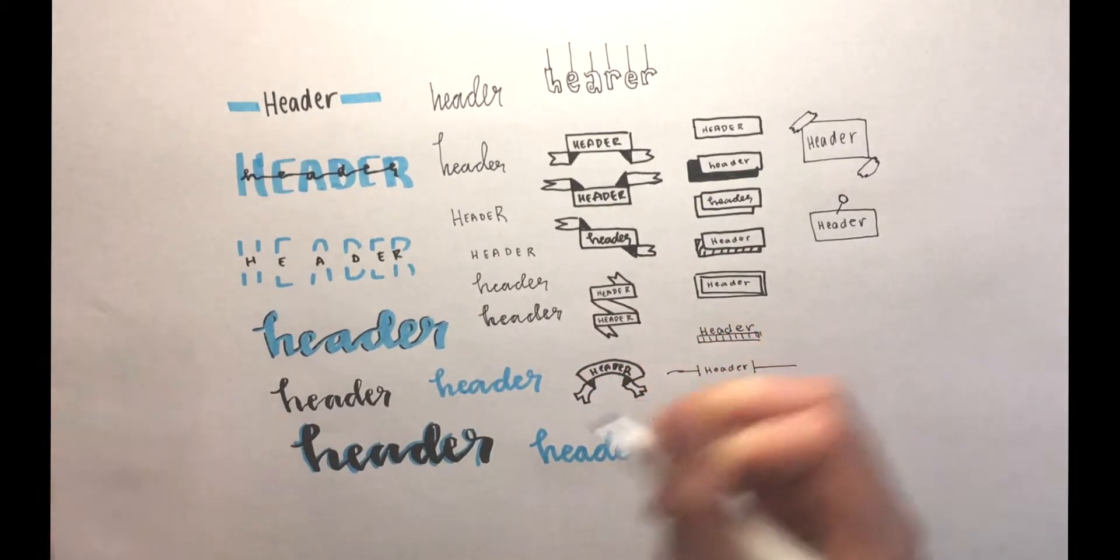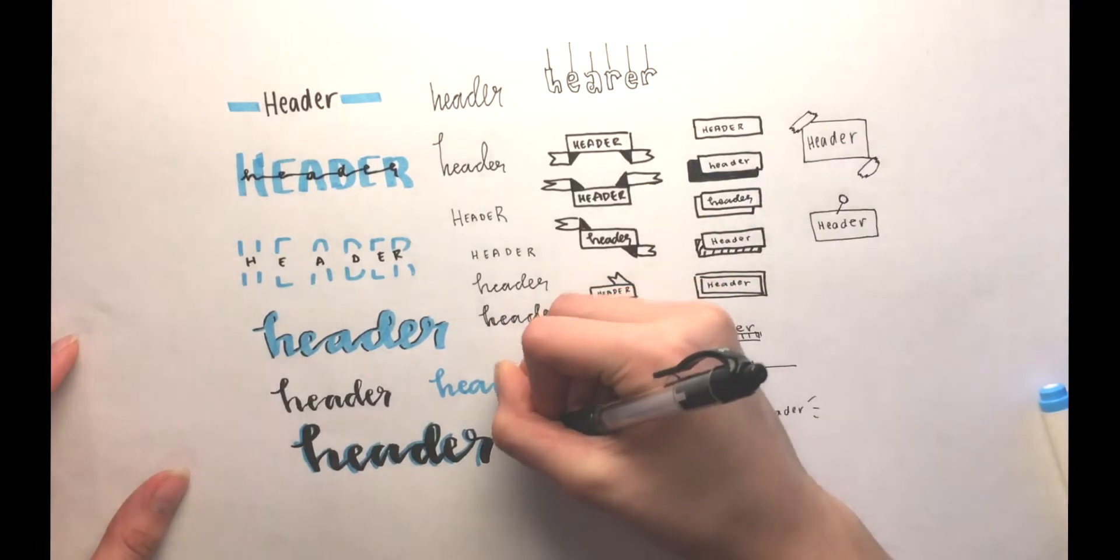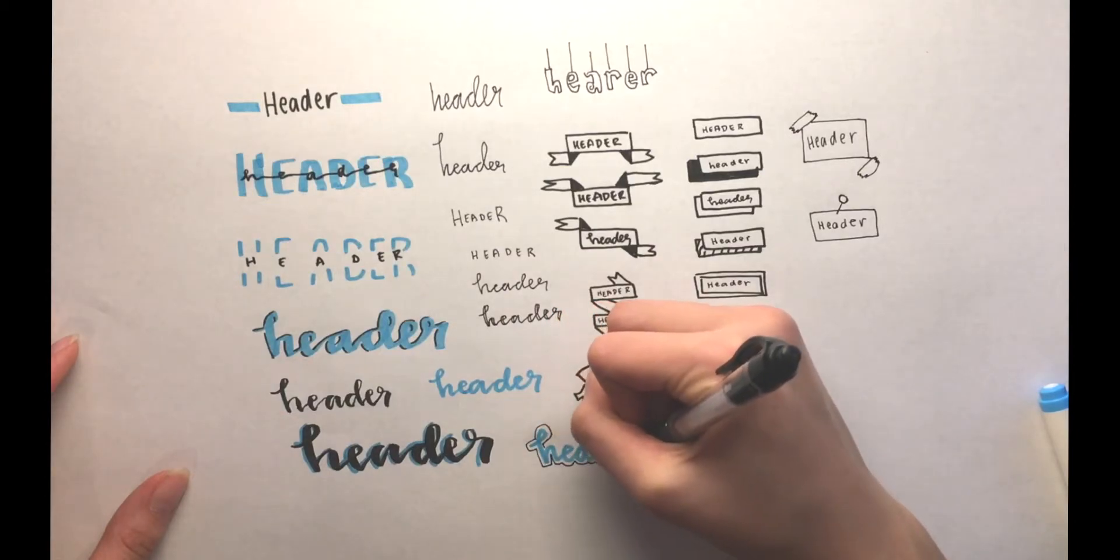So for this next one, I'm creating a calligraphy with a highlighter, and then I'm adding this outline in a black pen.